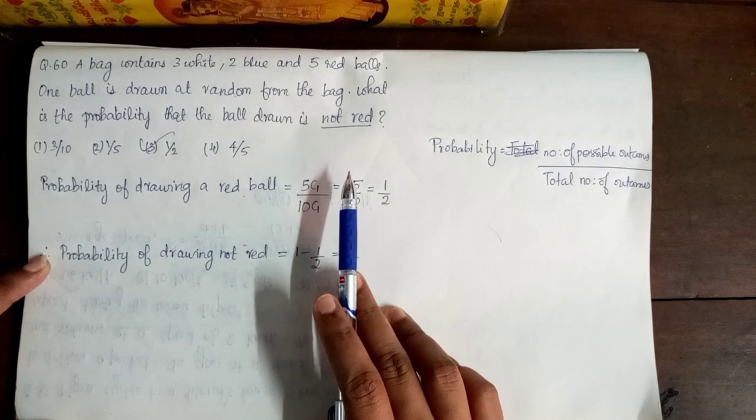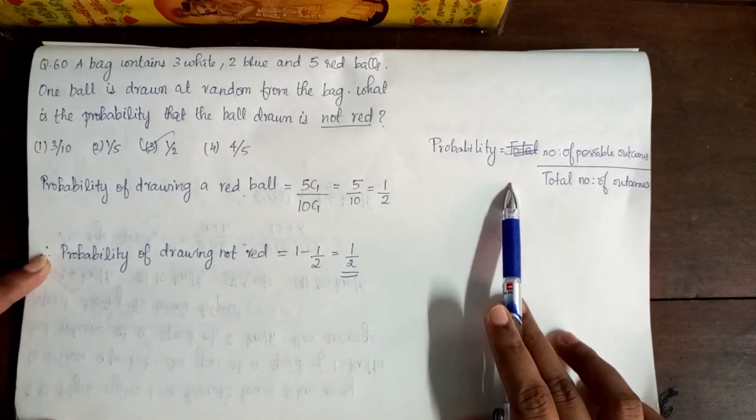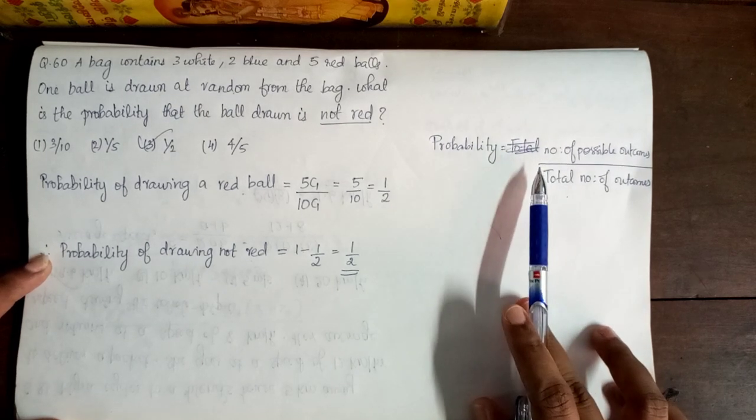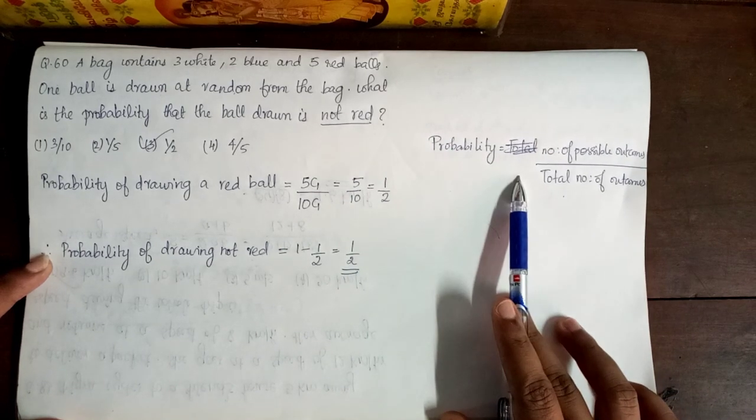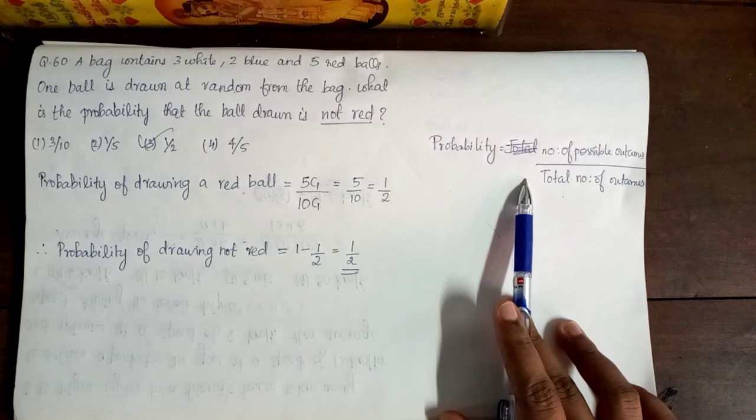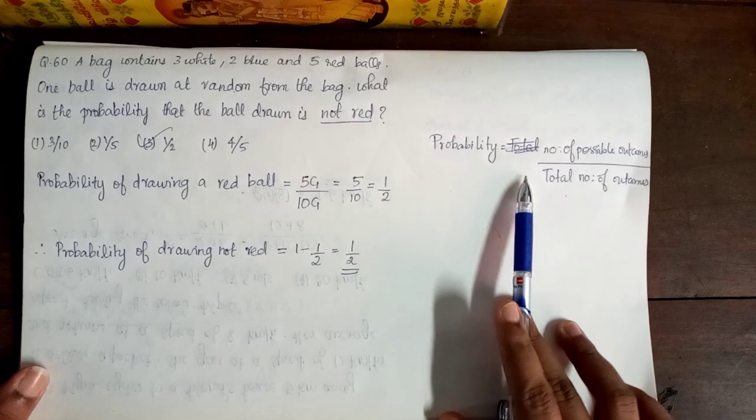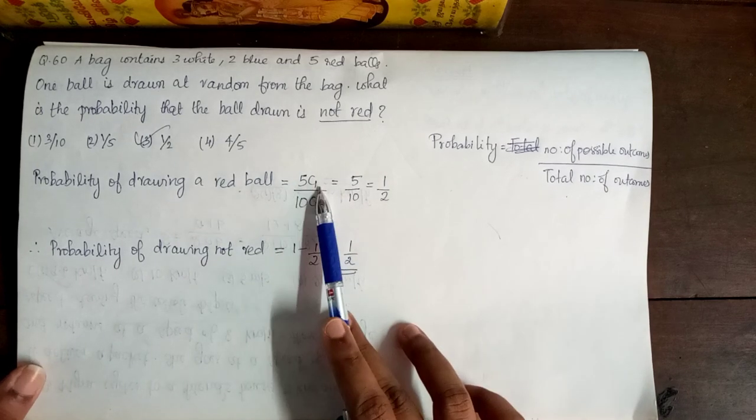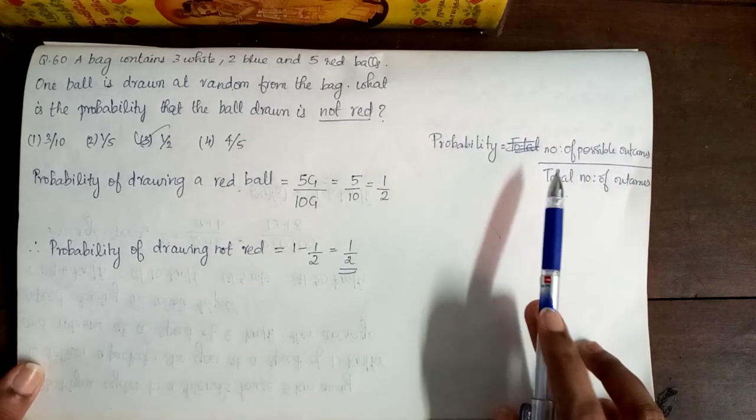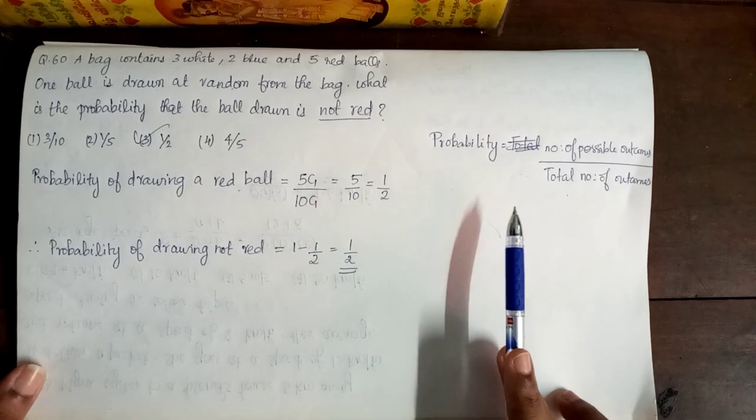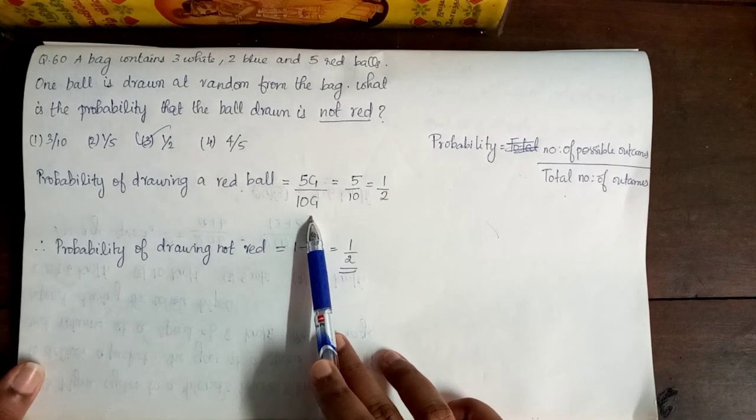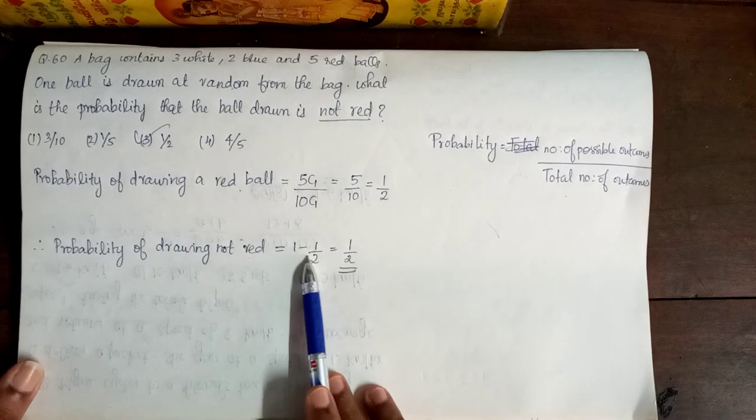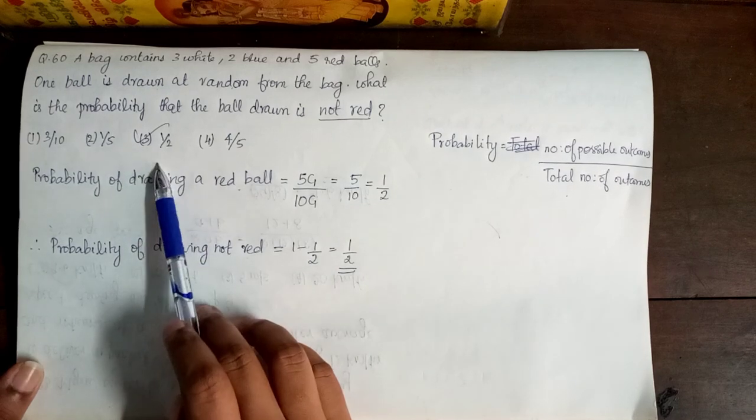It is a probability that the number of possible outcomes divided by total number of outcomes. Also note that the probability of drawing red balls plus the probability of drawing not red balls equal to 1. First of all, the probability of drawing a red ball is equal to number of possible outcomes. So, 5c1 divided by total number of outcomes. The total number of outcomes is 10. So, we have one ball added. So, that is divided by 10c1. So, I can calculate the number 1 by 2. Therefore, probability of drawing not red ball is 1 minus 1 by 2. That is equal to 1 by 2. So, option 3 is correct.